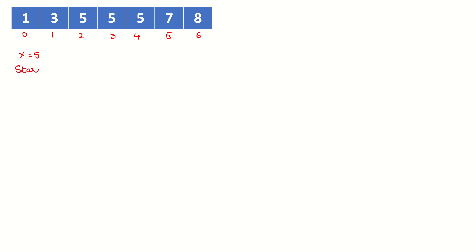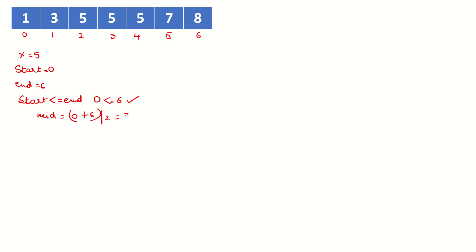To start with the searching process, I am going to set start to 0 and end to 6. This process will be repeated while start is less than or equal to end. For the first iteration, we calculate mid as (0 + 6) / 2 = 3. At index 3 we have found the value of X, so the condition becomes true.